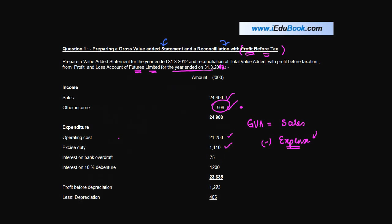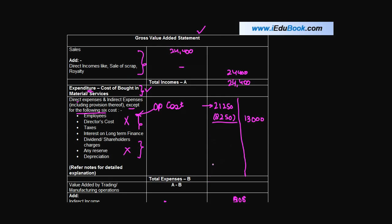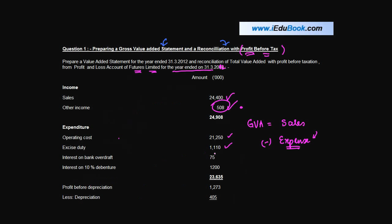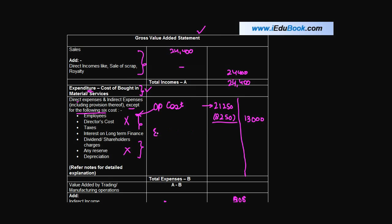Then you have Excise Duty, 1110. In case of Excise Duty, basically what happens is that we recover the Excise Duty from the Customer and we pay it to the Government. So it is not an expense for us. It is assumed that this Excise Duty is included in the Sales Figure. Therefore, this Excise Duty will be reduced.